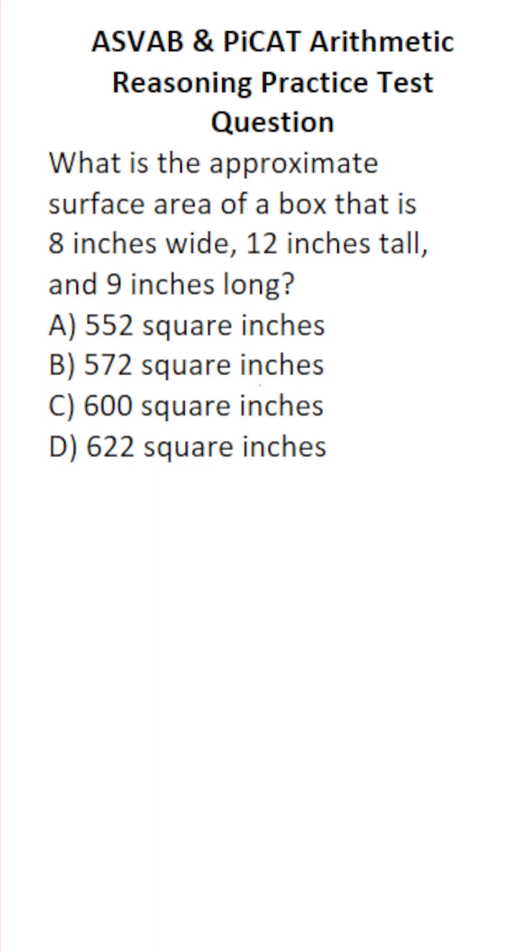So let's write down these three things. We have a box that is 8 inches wide, so its width W is 8. 12 inches tall, so its height is 12. And 9 inches long, so its length is 9.